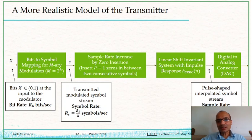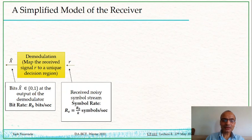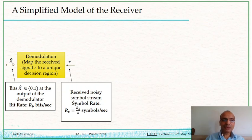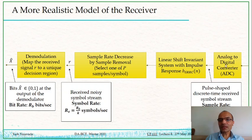With a more detailed transmitter model, we also design a corresponding receiver. We start from our simple model where samples come in at RS symbols per second, and the output of the demodulation based on decision regions is x-hat, which at RS times k gives RB bits per second. In the presence of pulse shaping, we add blocks: first an analog-to-digital converter, then a linear shift-invariant system at the receiver acting as a low-pass filter.